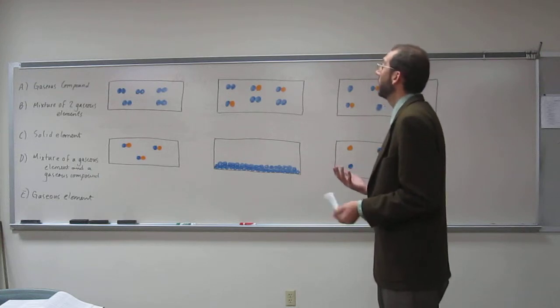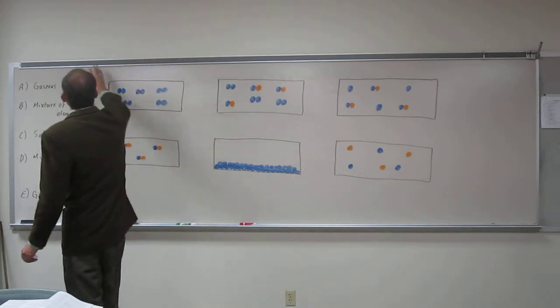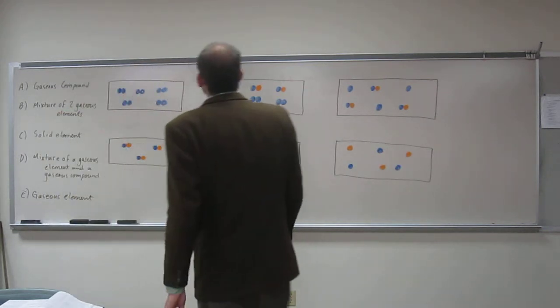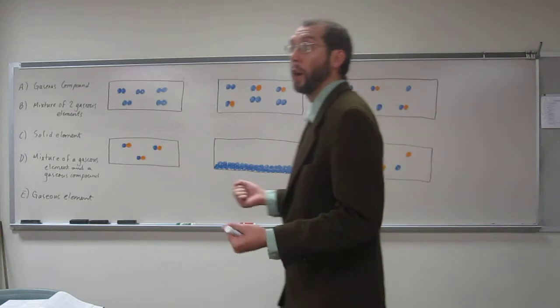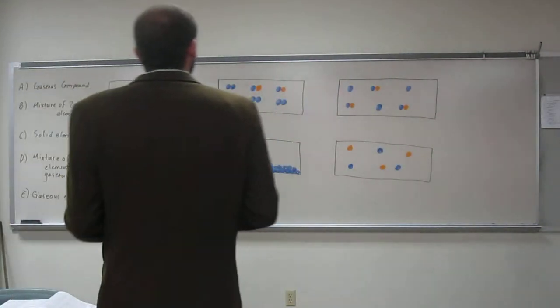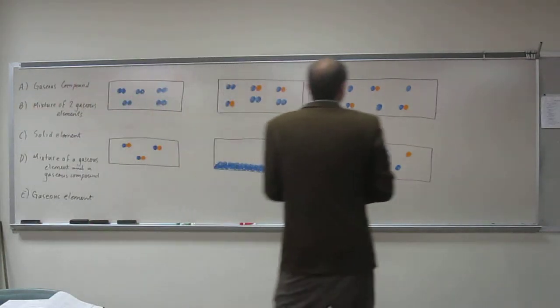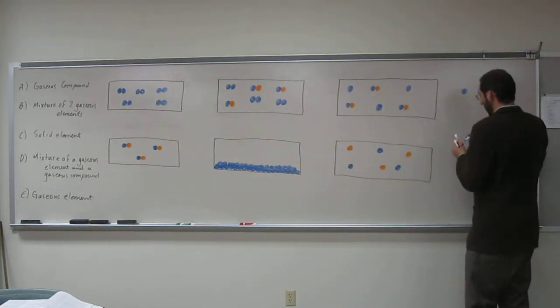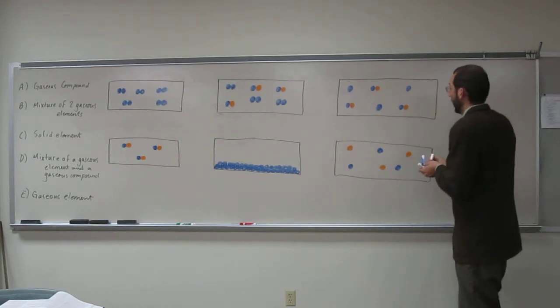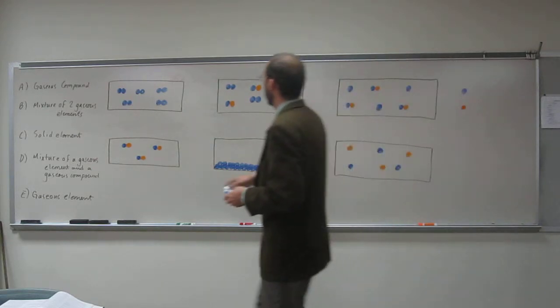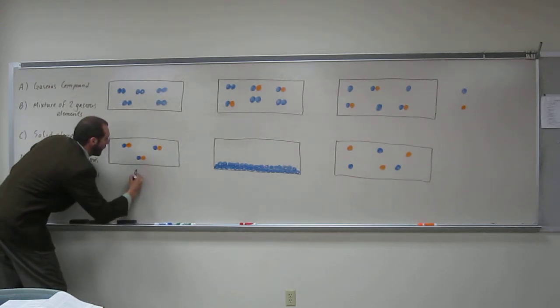So if you guys want to help me, you're more than welcome to. What I would do is just look at these choices and try to match them. So we've got the first choice is the gaseous compound. A compound is two or more elements stuck together, bonded together. So we're assuming that blue is one element and orange is another element. When we've got ones bonded together, it looks like we've got here is a gaseous compound. So that's A.